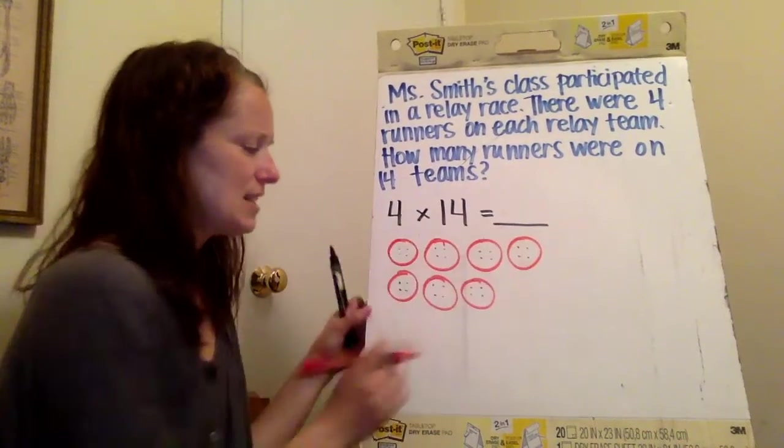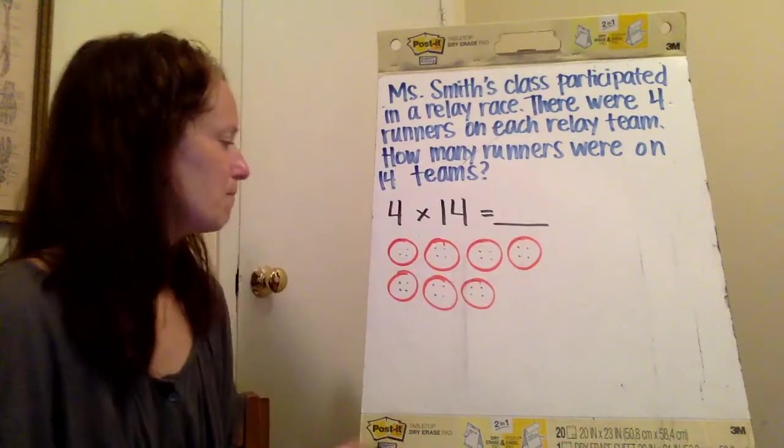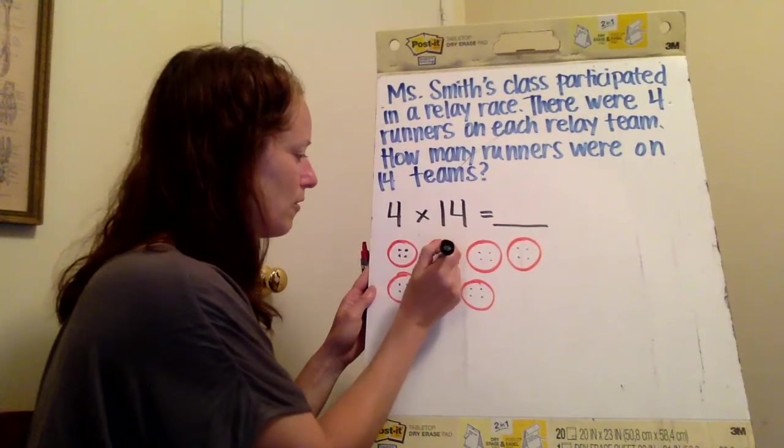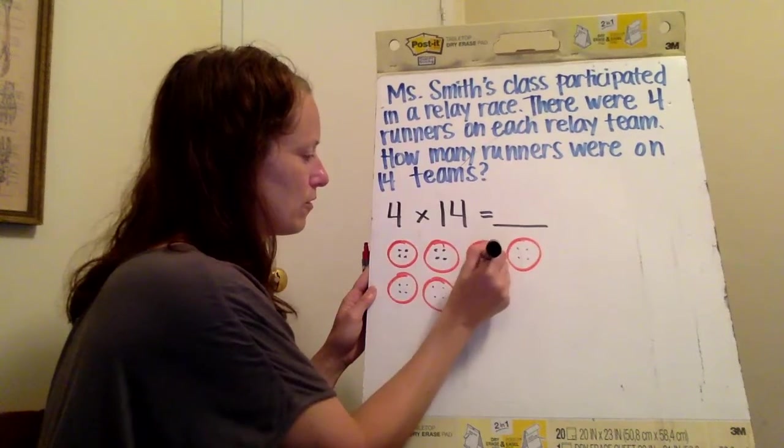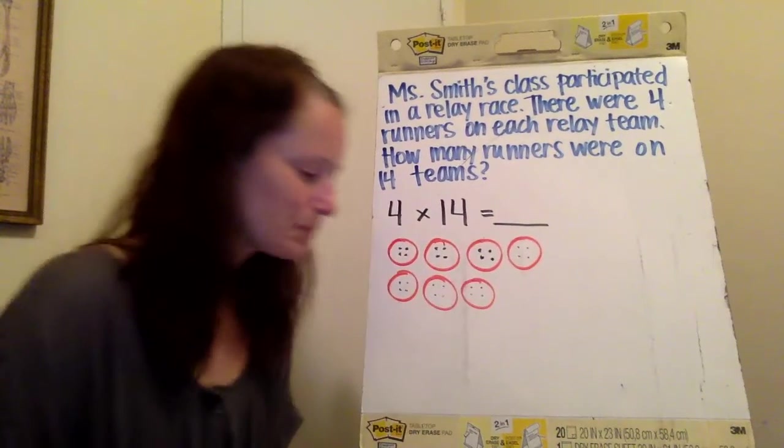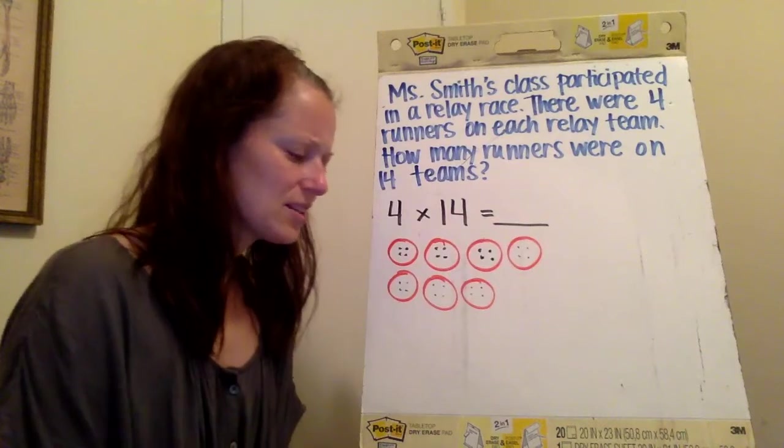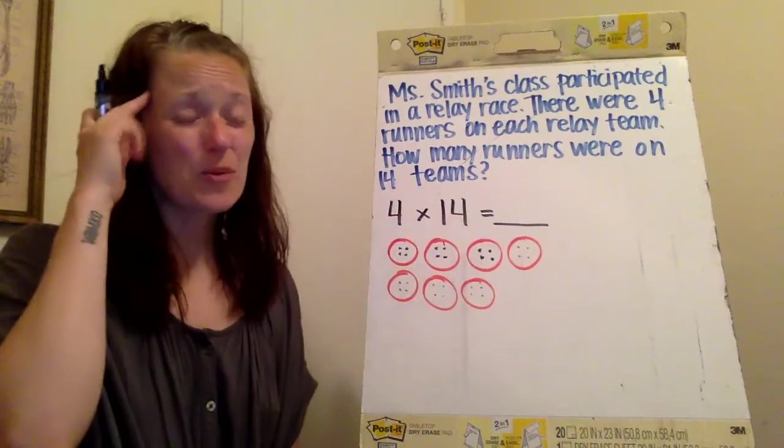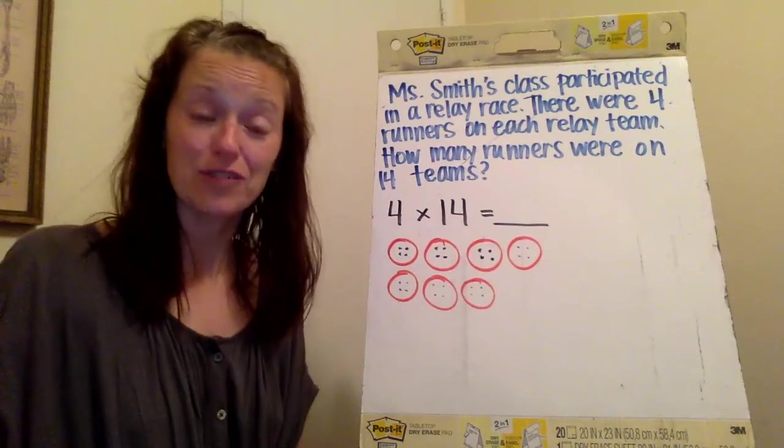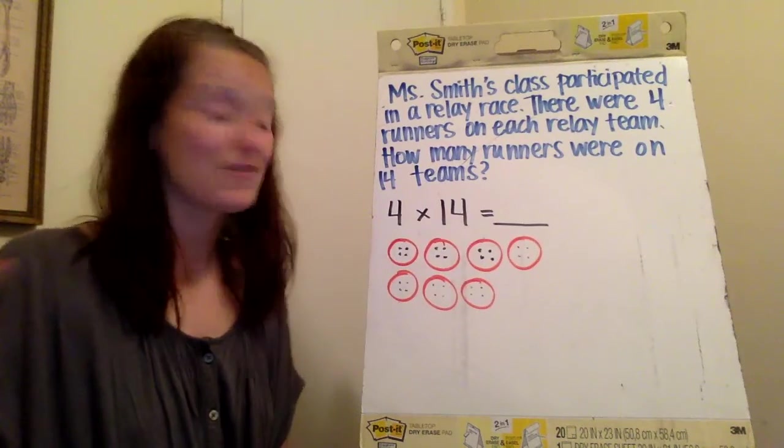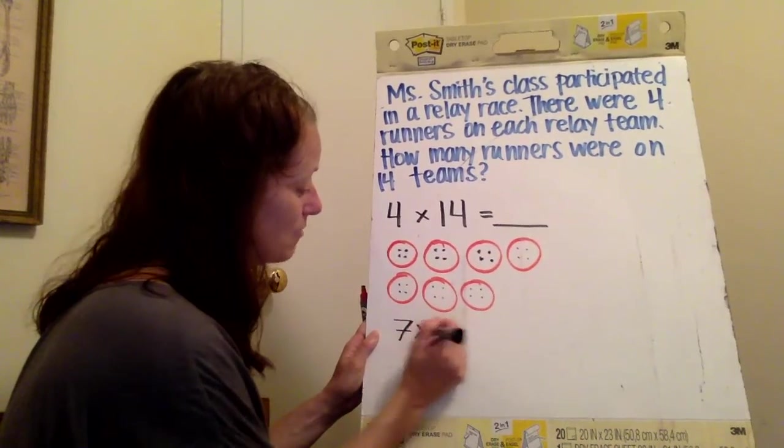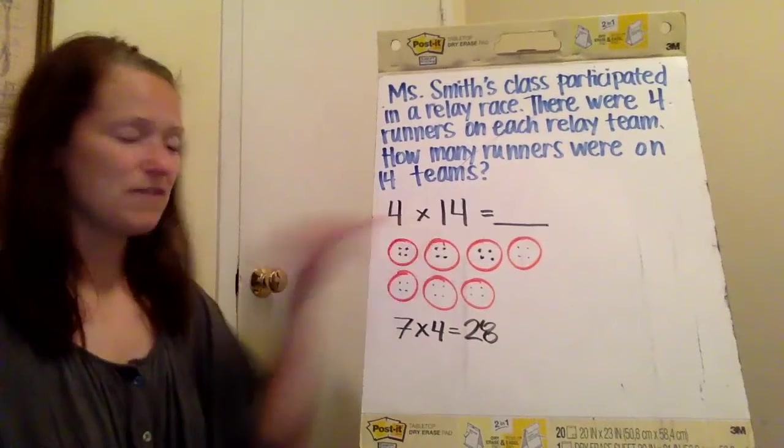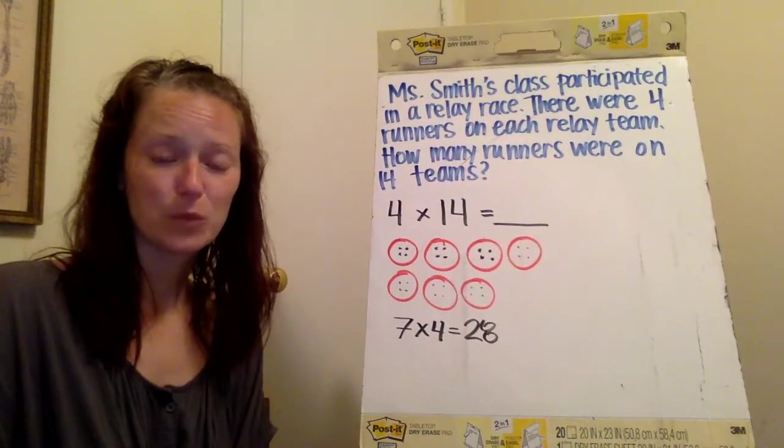So I have seven teams and then four runners in each team. I don't know if you can see my runners here. They're awfully small. So let's look here. So we know that there are 14 teams all together, but I thought, you know what? Seven is a much easier equation for me to do because I already know seven times four. Seven times four is equal to 28. So how can that help me solve this problem then? What do I need to do next?